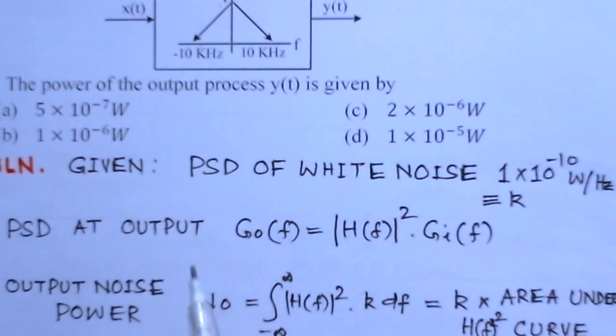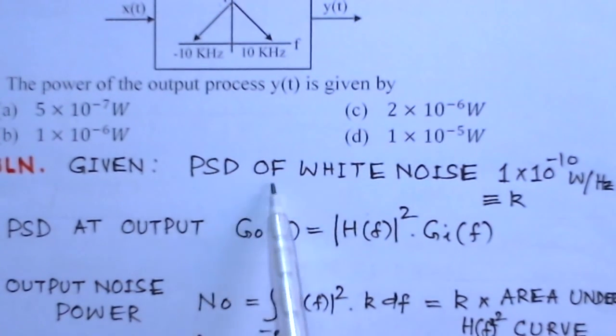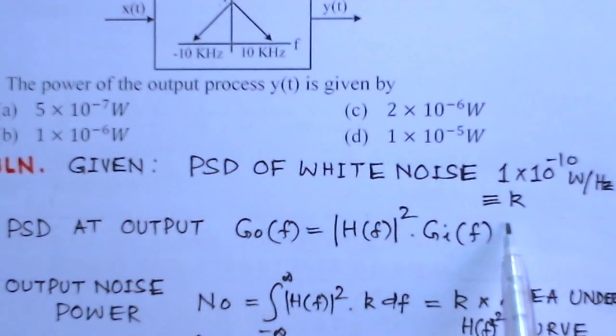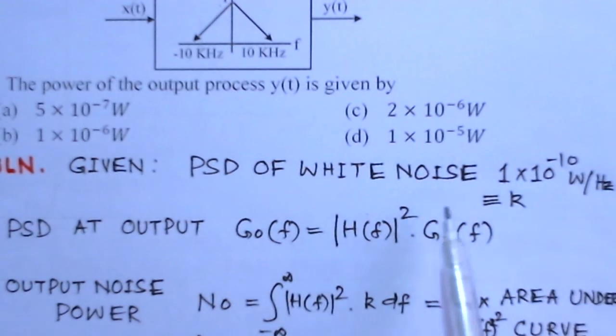It is given that power spectral density of the white noise is 1×10^-10 watts per hertz, and this value is going to be k. Although this is power spectral density, it is constant.